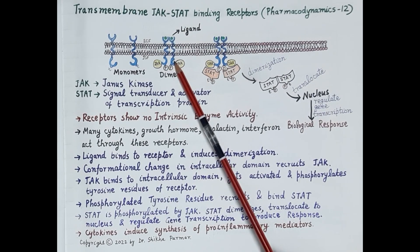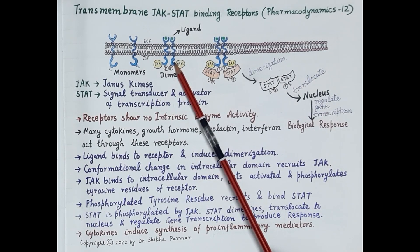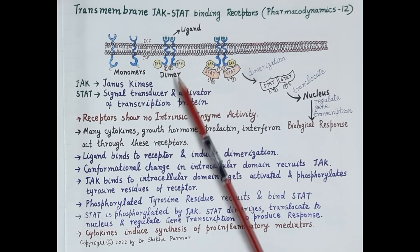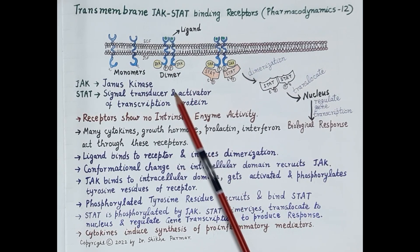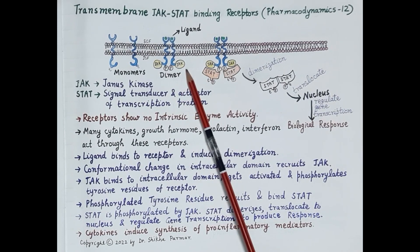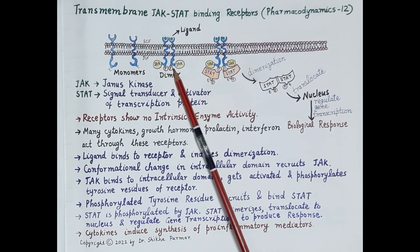Binding of ligand to these receptors induces dimerization of the receptor and a change in the conformation of the receptor. Conformational change in the intracellular domain increases the affinity of the intracellular domain towards JAK — the Janus Kinase protein present in the cytoplasm — and thus it recruits JAK. That means the JAK leaves the cytoplasm, binds to the intracellular domain of the receptor, and gets activated.